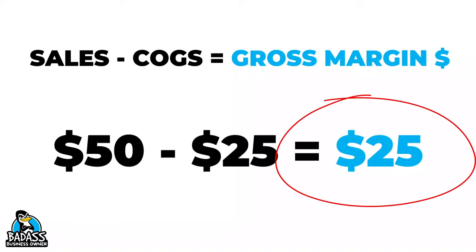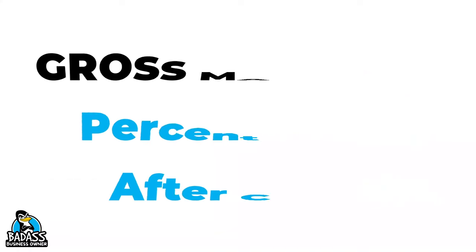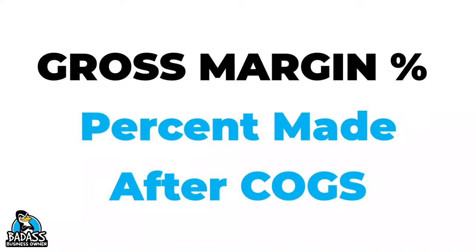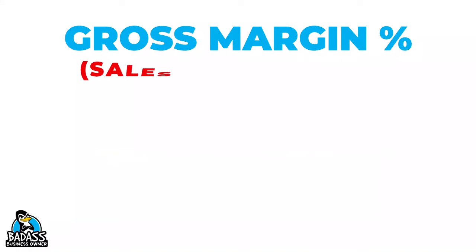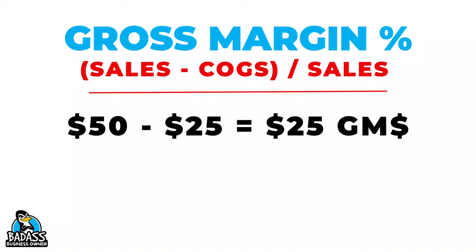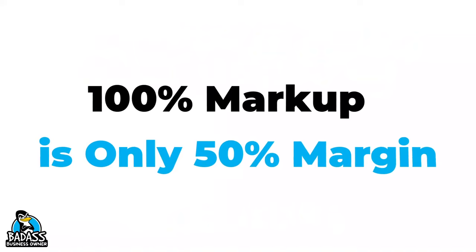Yes, your gross margin dollars match the markup amount, but this is where there is so much confusion. Gross margin percentage — which is what we always look at — tells you how much of your sales price goes towards cost of goods. The formula is: sales minus cost of goods, divided by sales. Since everything is a percentage of sales, we calculate: $50 minus $25 equals $25 gross margin, then $25 divided by $50 equals 0.5, or 50%. So your 100% markup is really only a 50% gross margin, meaning only 50% of your sales is left to pay expenses and create profit.